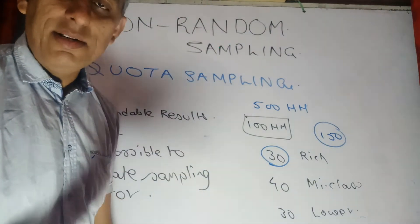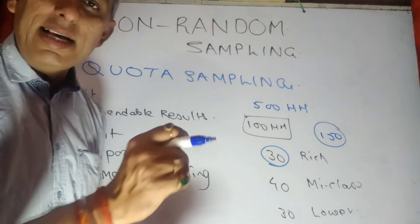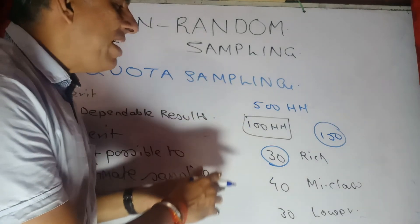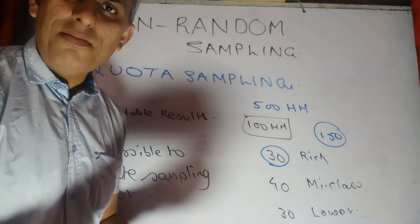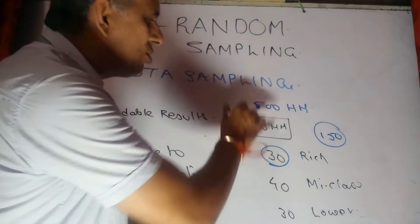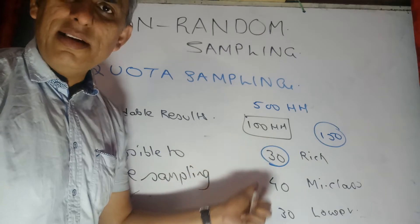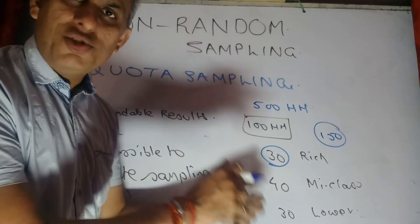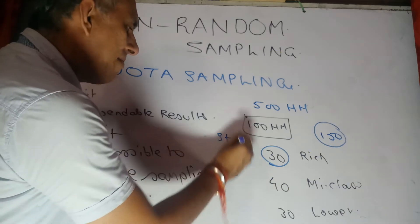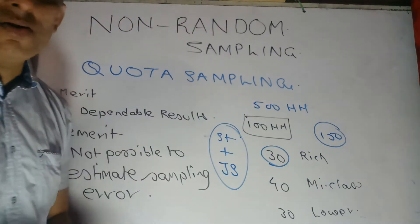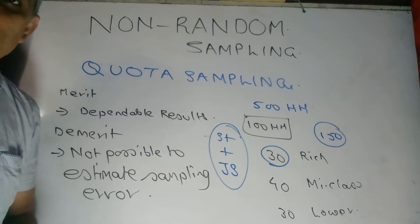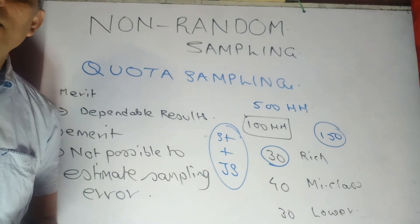So the basic difference between quota and stratified sampling is that stratified sampling, when a little bit of judgment sampling comes in, becomes quota sampling. It starts as stratified and then becomes judgment-based. It is a combination of stratified as well as judgment sampling — that is what you call quota sampling.